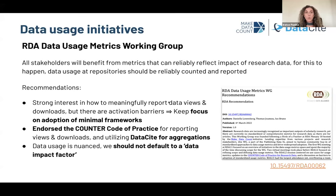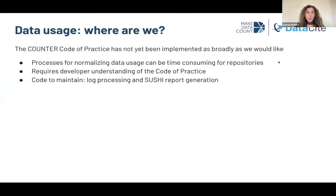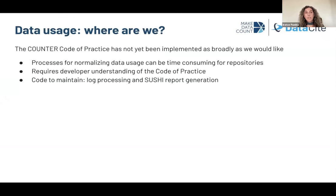The recommendations from this working group were published last year. I would particularly note that there was an endorsement for the COUNTER code of practice for reporting views and downloads and for utilizing DataCite for aggregating that information. Another important recommendation was that data usage is very nuanced and we shouldn't be tempted by oversimplification or developing a single opaque metric that is not going to benefit the community. So we know this is challenging but we need to work on this in a nuanced way. We would like to see movement into adoption of these best practices by the different actors in the community.